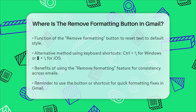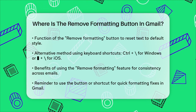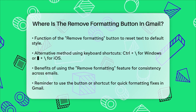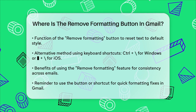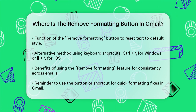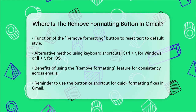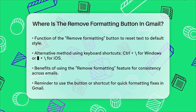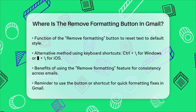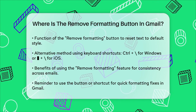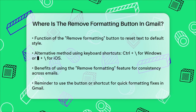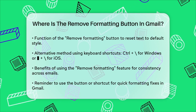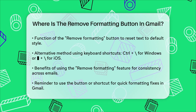This feature is super handy because it saves you the trouble of manually changing fonts, sizes, and colors. It also ensures that your emails look consistent across different email clients and devices. So the next time you're dealing with messy formatting in Gmail, just remember to highlight the text and click the Remove Formatting button or use the keyboard shortcut to get your email looking just the way you want it.